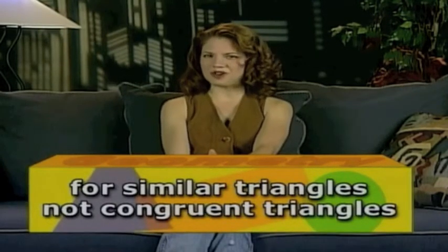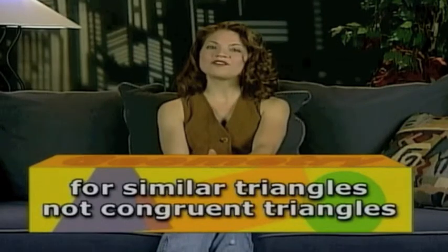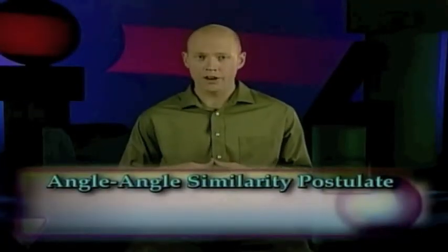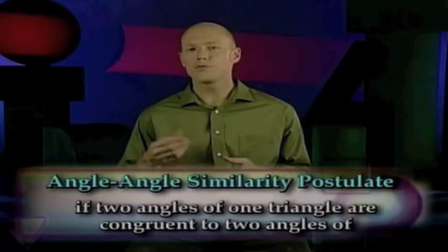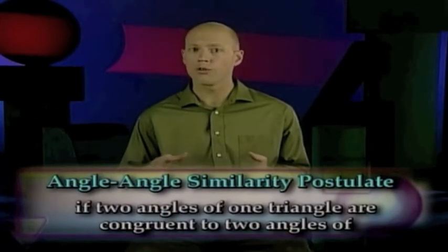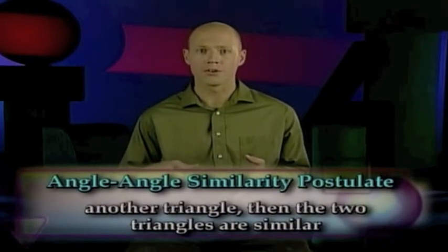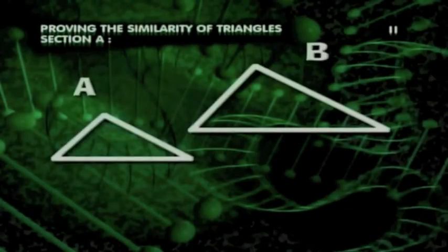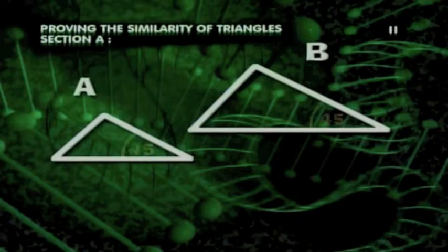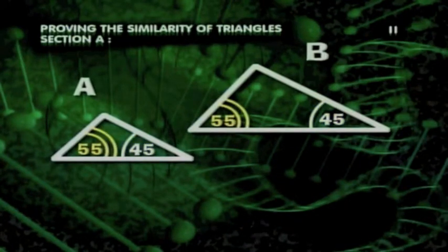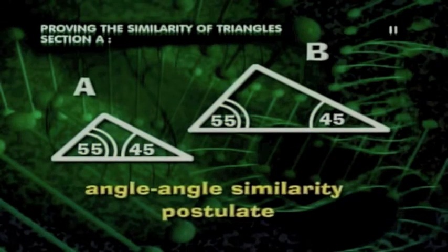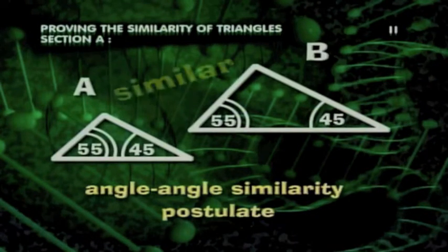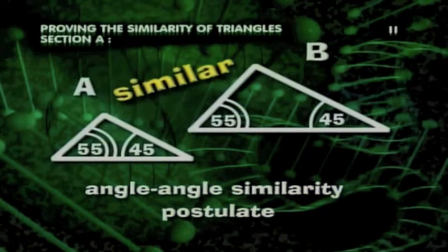Let's take a look at our new postulate and theorems and solve a few examples with them. The angle-angle similarity postulate states that if two angles of one triangle are congruent to two angles of another triangle, then the two triangles are similar. So let's say we have triangle A and triangle B. They both have angles that measure 45 degrees and 55 degrees. By the angle-angle similarity postulate, we can say they're similar, not congruent, but similar.